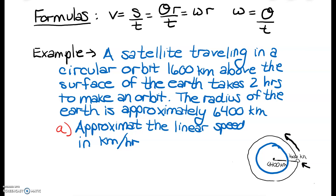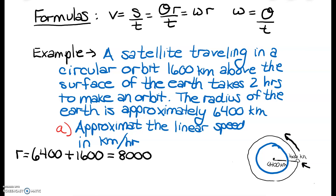This satellite follows the path of a circle, so let's calculate the radius of that circle. The Earth has a radius of 6400 kilometers, and the satellite is 1600 kilometers beyond the surface of the Earth. So the satellite follows a circular path with a radius of 8000 kilometers.